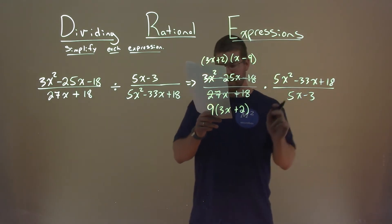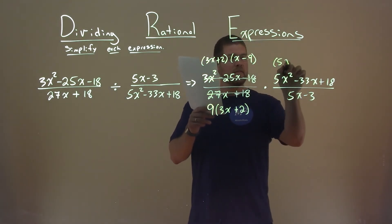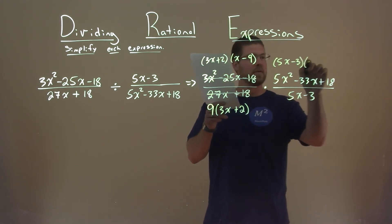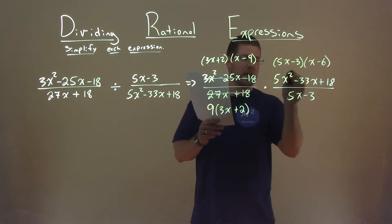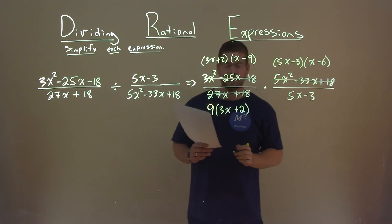We're going to factor the numerator here, and that comes out to be 5x minus 3 times x minus 6. We're replacing it with this factored form, and 5x minus 3 is already simplified.